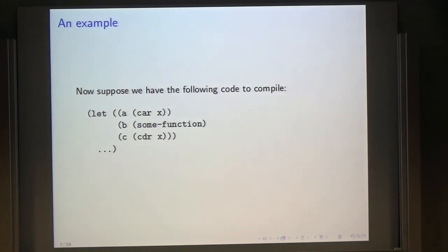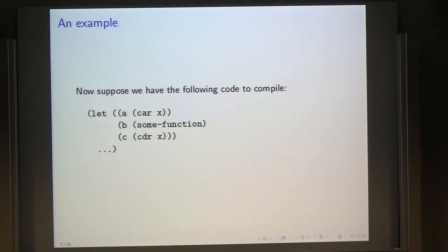Now suppose we have the following code that we're going to compile: let A = car(X), B is some call to a function, and C is cdr(X). What we're going to do is macroexpand the CAR and the CDR and then trace the type of the X variable. The ABC we don't really care about, so they're not going to be present in the code. All the information presented is about X.